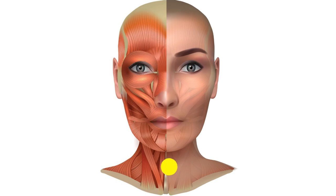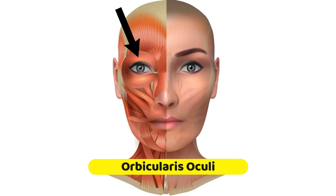The orbicularis oculi muscles are located in the eyelids. The sphincter muscles are arranged in concentric bands around the upper and lower eyelids. Their main purpose is to close the eyelids, but they also assist in the drainage of tears from the eyes.